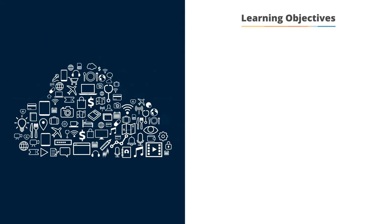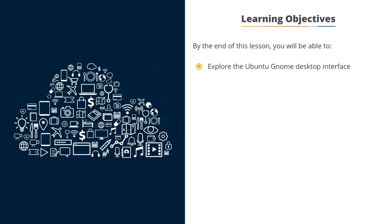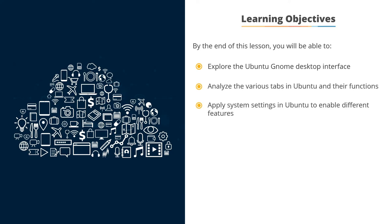Let us look at the learning objectives. By the end of this lesson, you will be able to: explore the Ubuntu GNOME desktop interface, analyze the various tabs in Ubuntu and their functions, apply system settings in Ubuntu to enable different features, and outline the network configuration using the GUI.